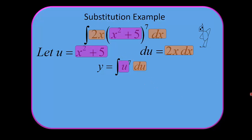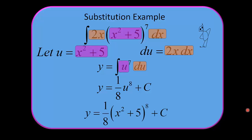Then I can just integrate using the power rule for integration. And if we want to, we can substitute back in — because remember, u is x squared plus 5 — and get one eighth times x squared plus 5 to the eighth plus c. And there you have it. There's an example of the substitution method.